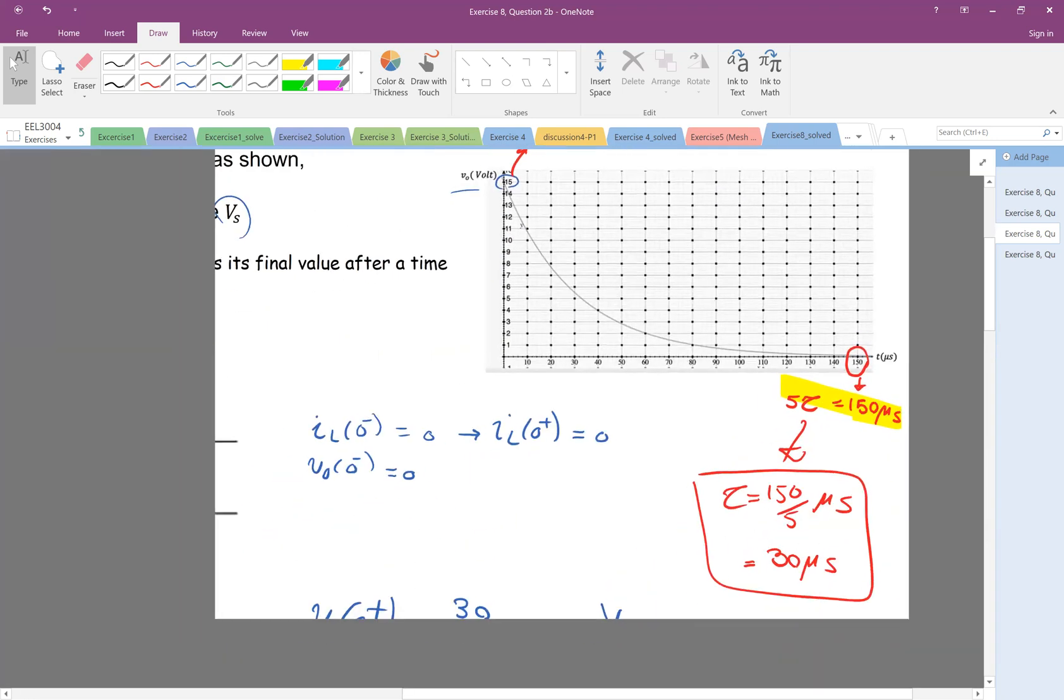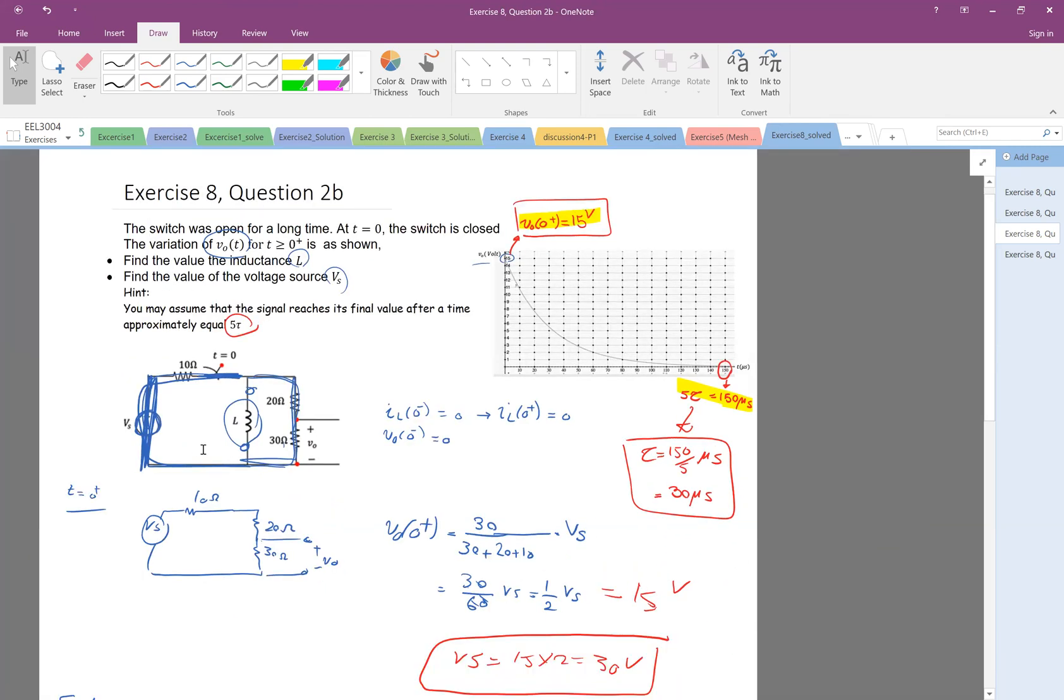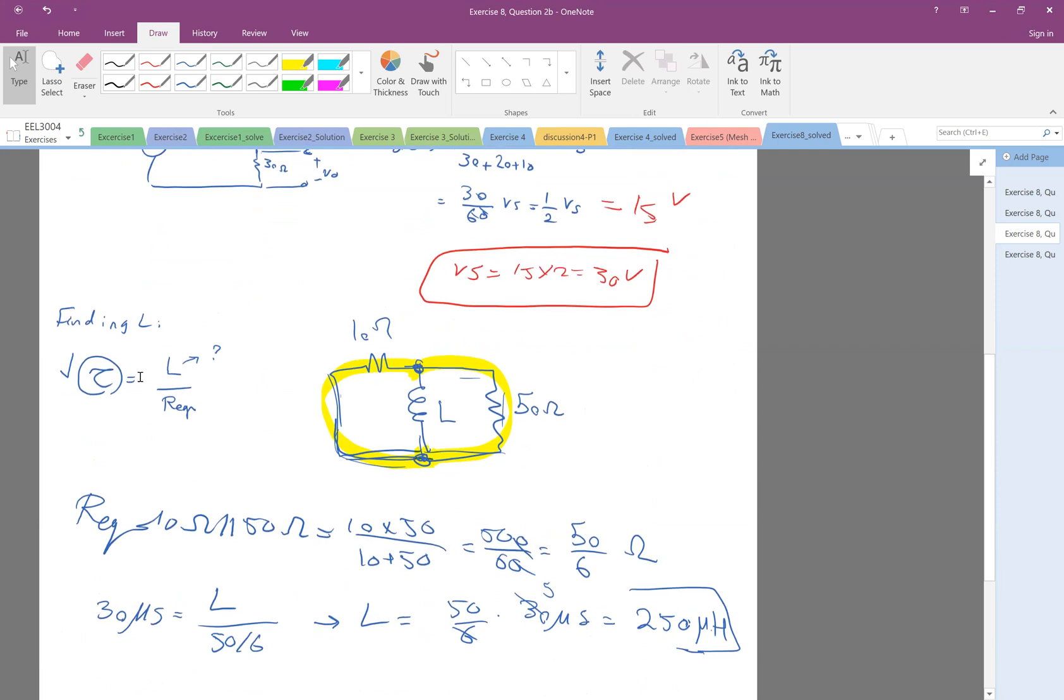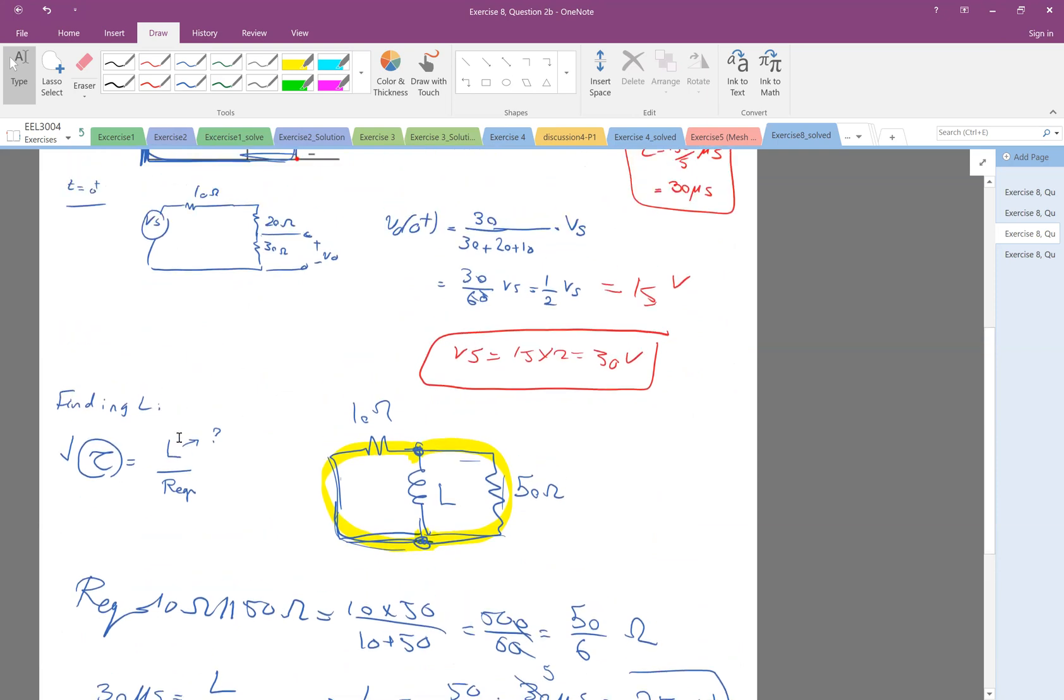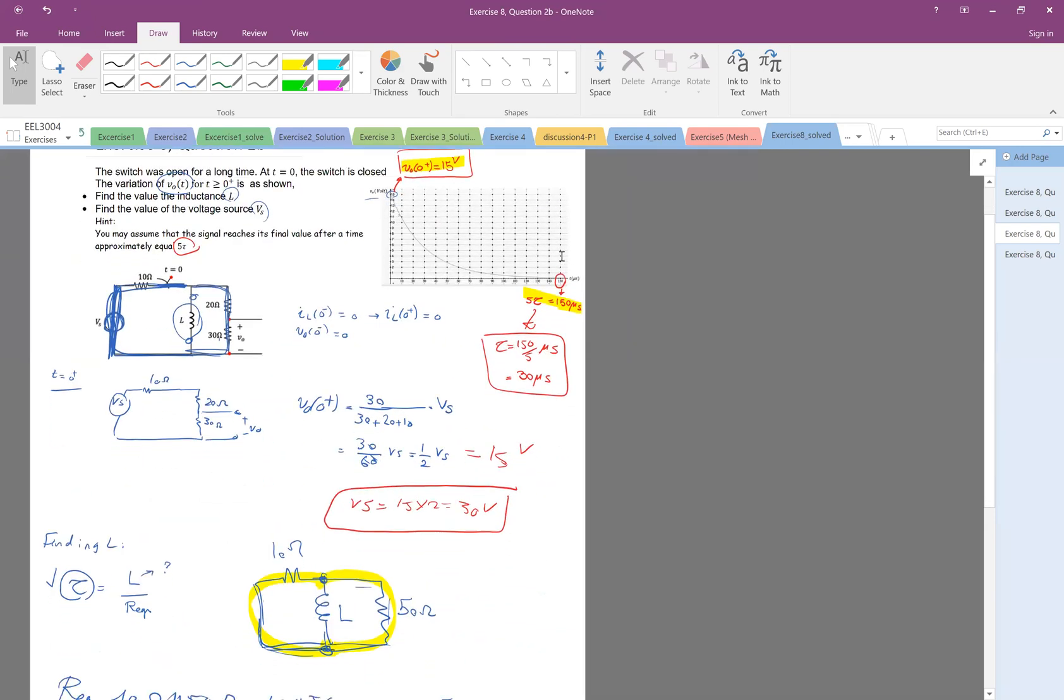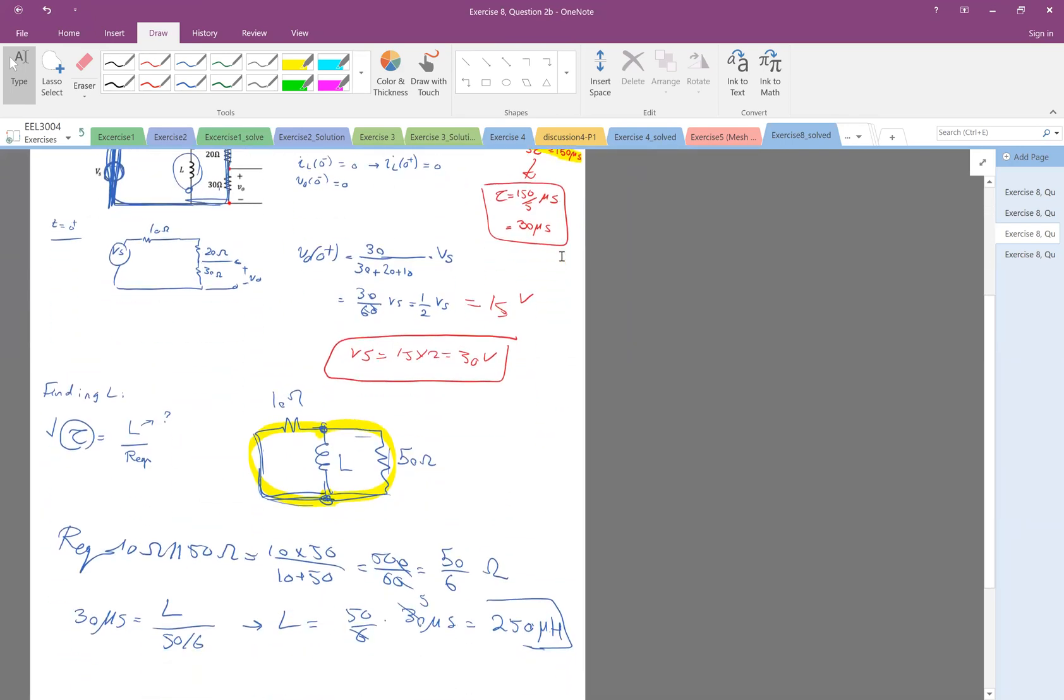Now based on that information, you have tau, you have R equivalent which you could find it, and then based on that you could find L. Or here in this case, Vs was not given, so based on the V0 you could find Vs. So it's just a different way of looking at the problem.